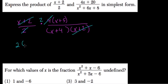So we have 2 times x plus 5 over x plus 4. I think that would be acceptable.